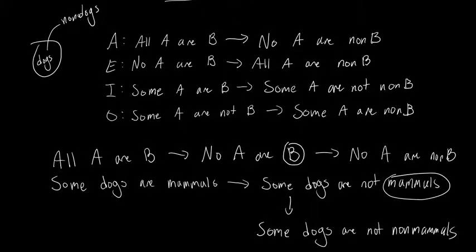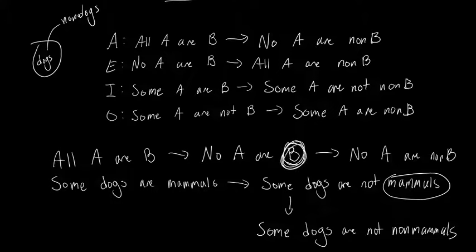And that's what there is to obversion. It's a little tricky, but with practice you will get there. Just remember there are two steps. First, if it's an affirmative statement, make it negative; if it's negative, make it affirmative. And then second, you want to turn that predicate into its complement.